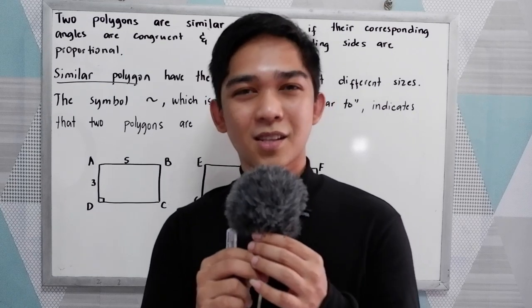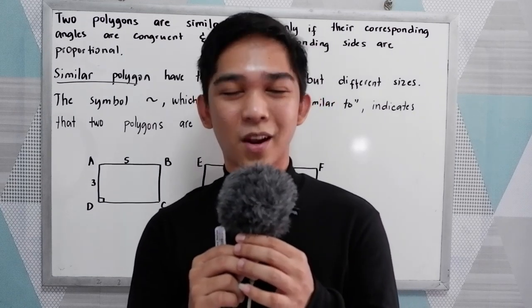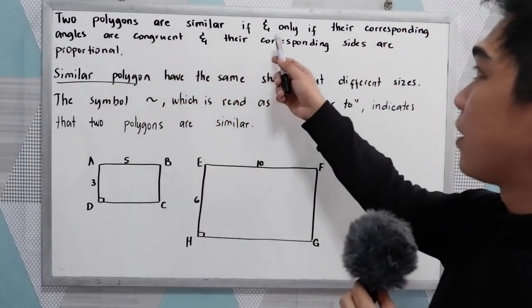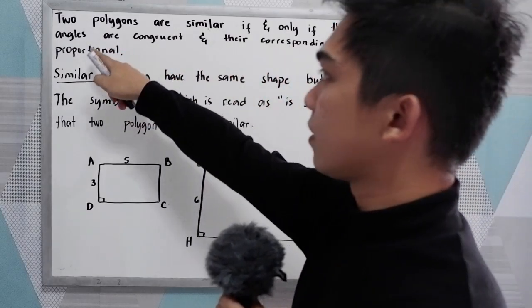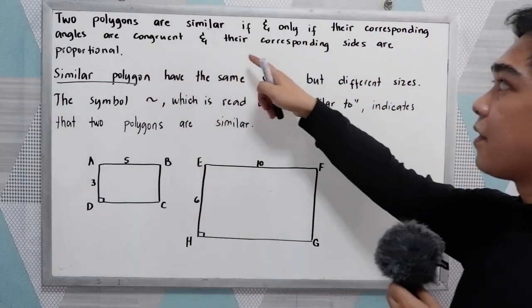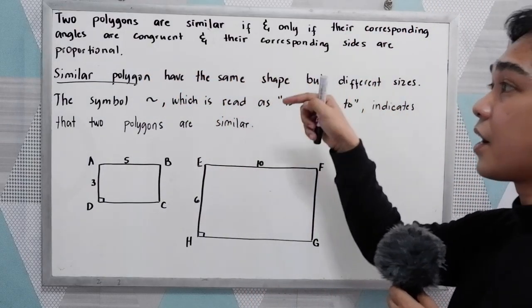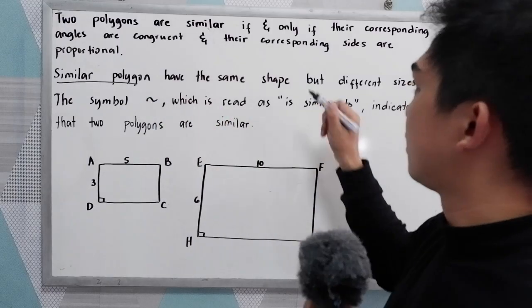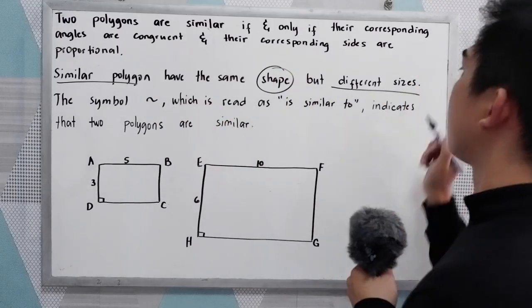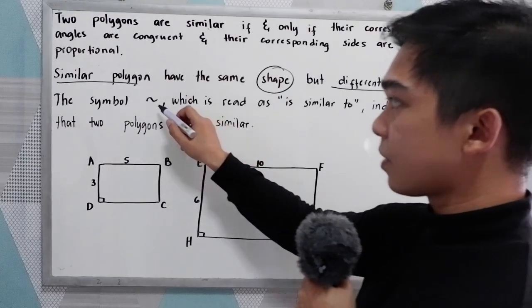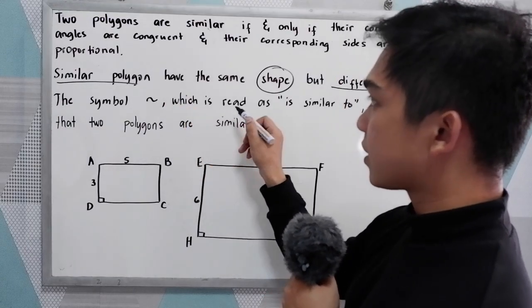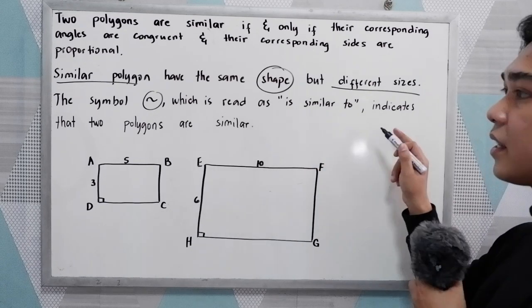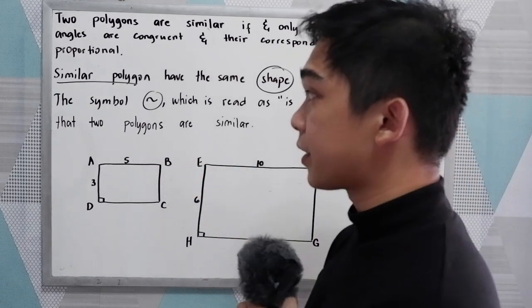Good day everyone. Today I will be discussing similar polygons. Two polygons are similar if and only if their corresponding angles are congruent and their corresponding sides are proportional. Similar polygons have the same shape but different sizes. We use the similarity symbol, read as 'is similar to,' to indicate that two polygons are similar.